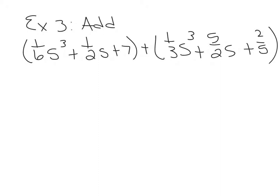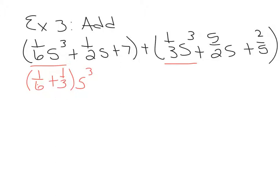At the top of page 102 we have example 3, which is asking us to add two trinomials: 1/6 s cubed plus 1/2 s plus 7, plus 1/3 s cubed plus 5/2 s plus 2/5. The s cubed terms are like terms, so we need to add the coefficients: 1/6 plus 1/3. Those need a common denominator of 6, so 1/3 becomes 2/6. Adding them together makes 3/6, which is 1/2. So this becomes 1/2 s cubed.